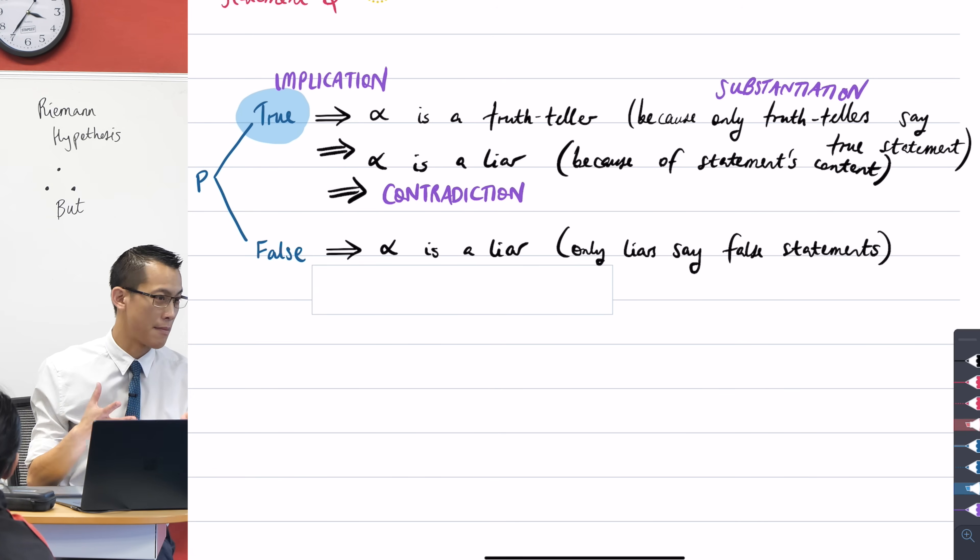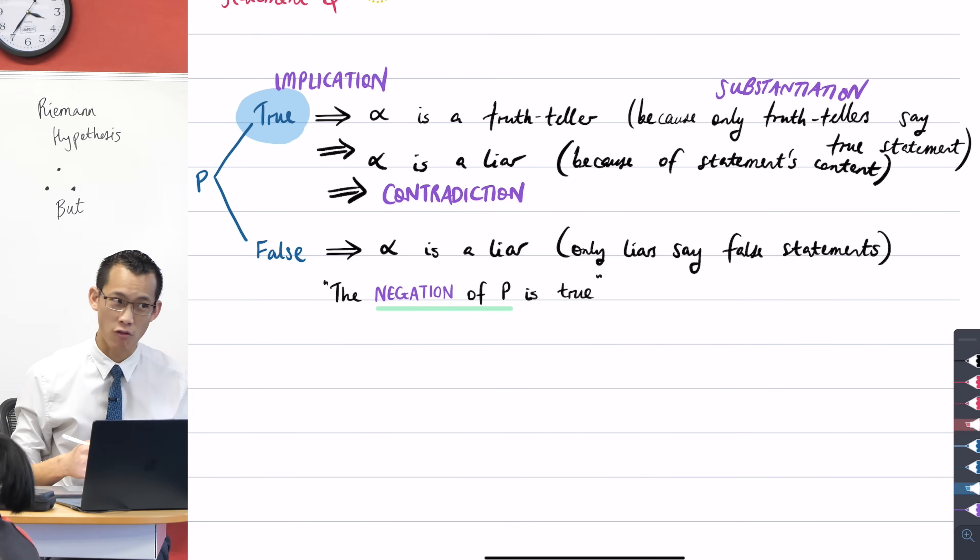If P is false, then the opposite of P is true. Now in the nature of proof, in mathematical logic, we have a fancy name for the opposite. We call it a negation. We're familiar with this language of negatives from just numbers, but in logic, the negation of P is the literal opposite statement to P.